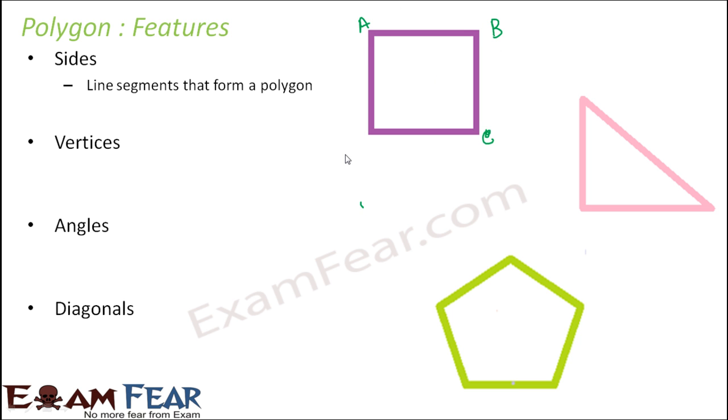So if you take the example of this polygon, let's say, let's name this as A, B, C, D. So here AB, BC, CD and AD, these are the sides of the polygon. If you look at this triangle D, E, F, then DE, EF and DF are the sides of the polygon.